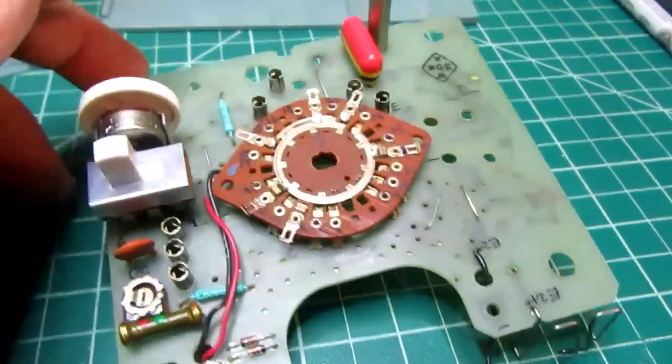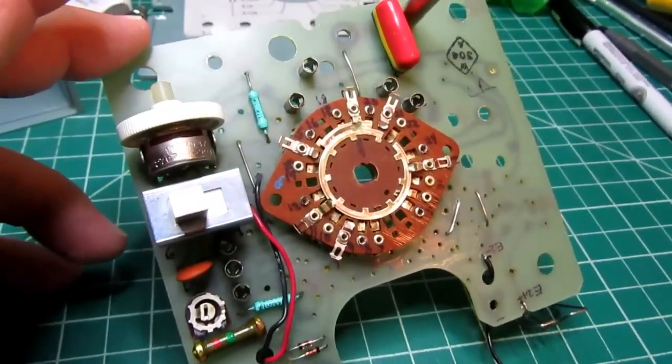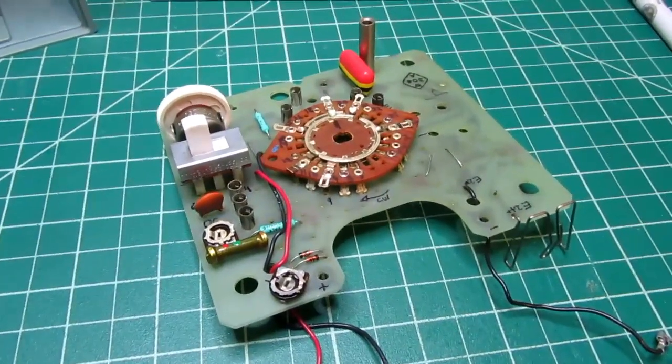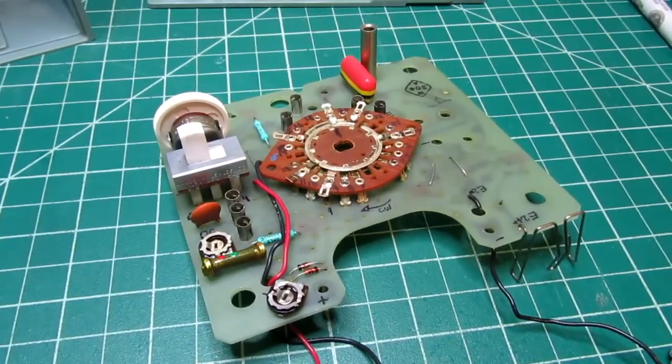It almost looks like a kludge the way it's put on there, like maybe they didn't have it originally in the design and decided to put a high-value pot across that and stick it up in that part of the board. This is the only one of these I have, and I couldn't find any documentation on it.